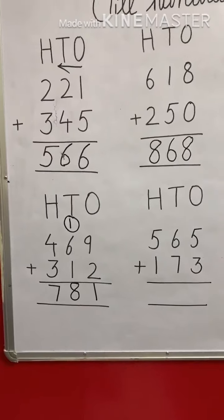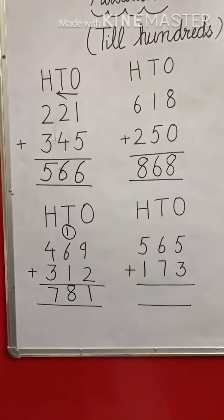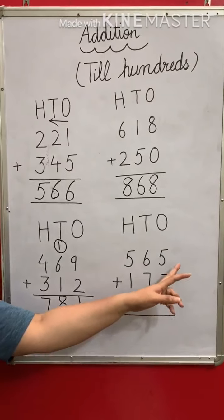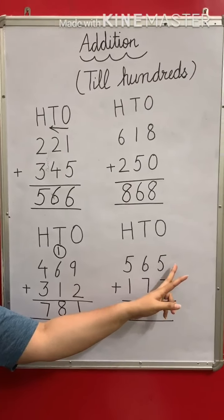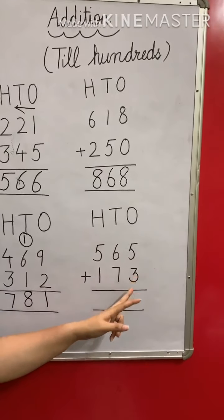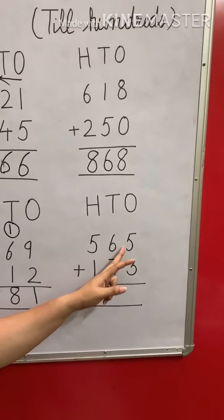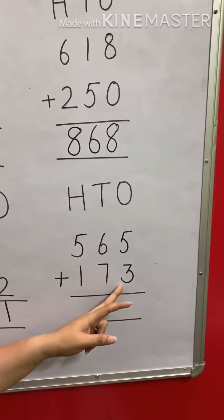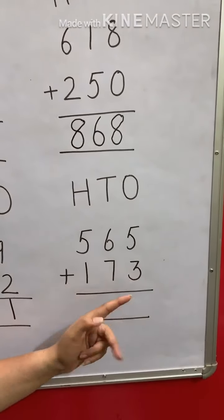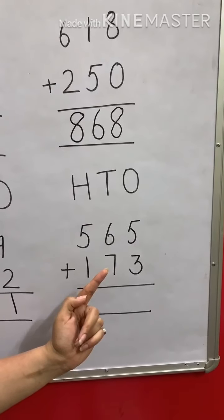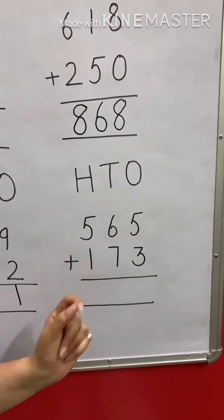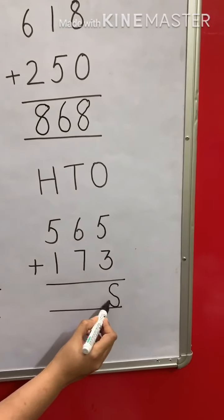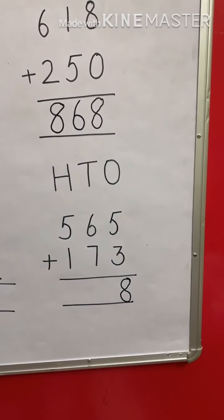Hope you are finding it easy. Let's move further. The next one has digits 5 and 3 at the ones place. So we are going to keep 5 in mind and count 3 blocks. After 5: 6, 7, 8. So we are getting 8 at the ones place — no carry over this time.